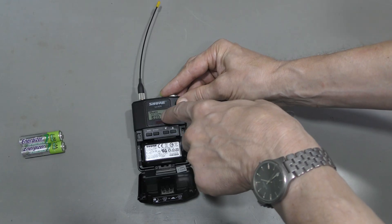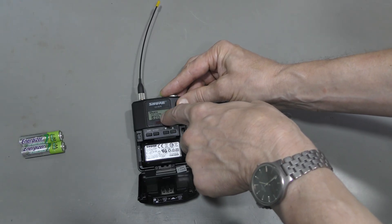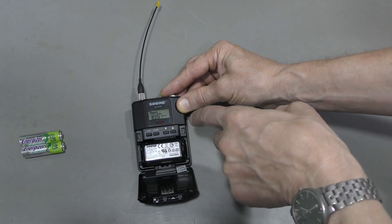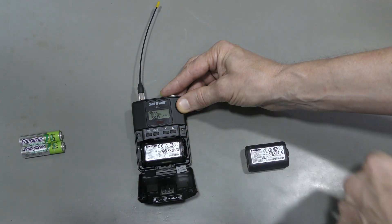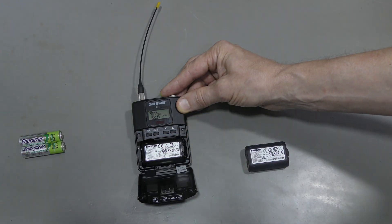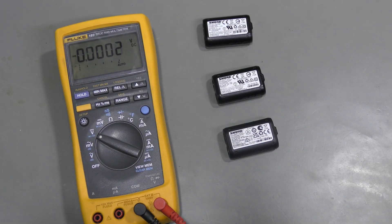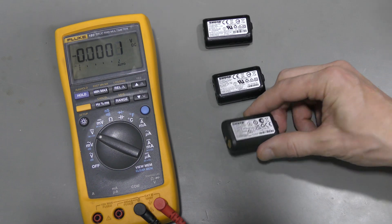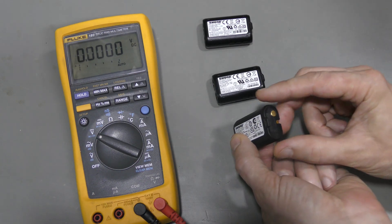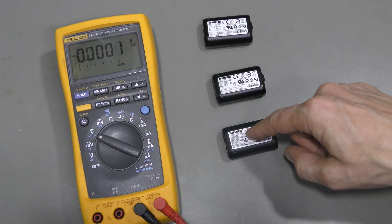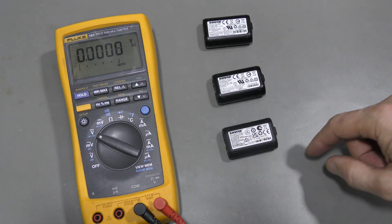So here we have an estimate of 5 hours and 21 minutes. And this battery is not fully charged. Here I have three versions of the battery: SB900, SB900A and B. And this one is dead. So let's have a closer look.